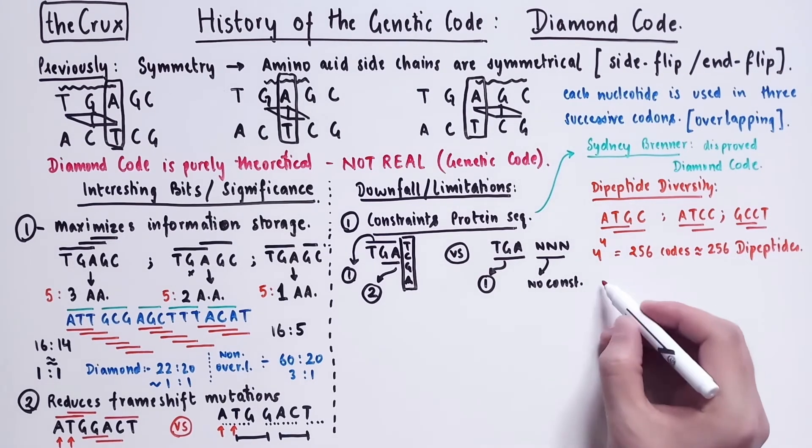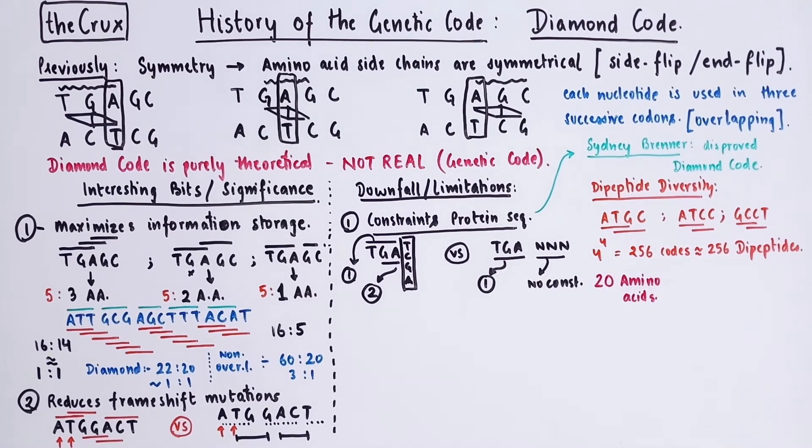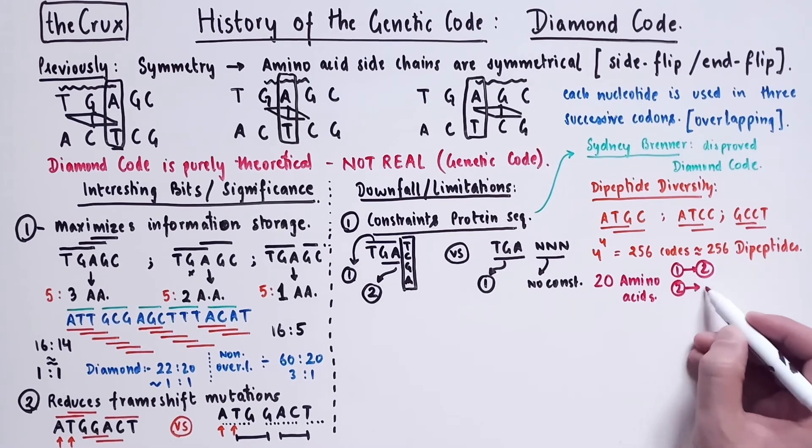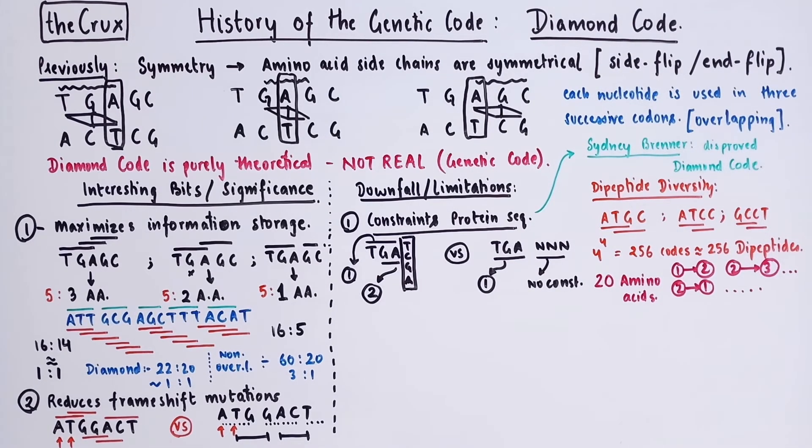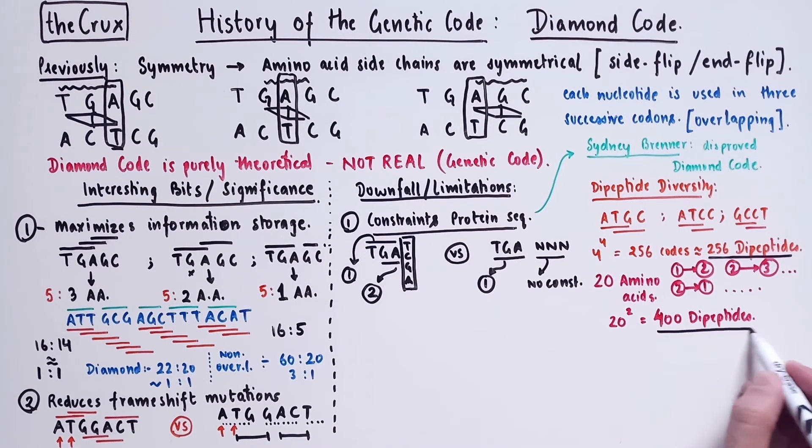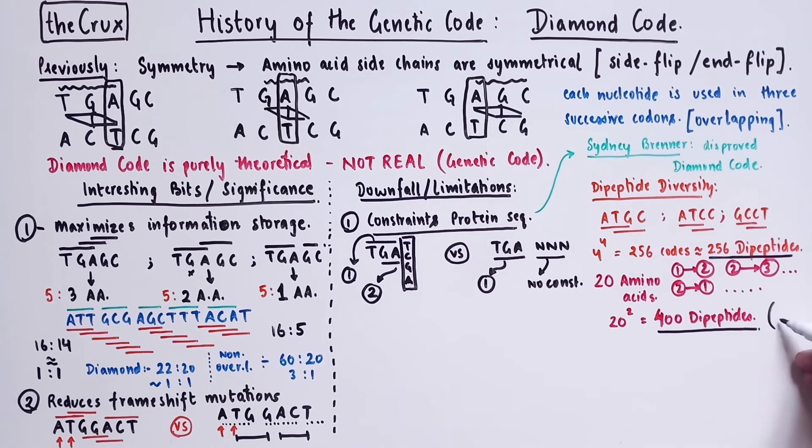But we know that there are 20 natural amino acids in total. And if you think about two amino acids joined together, you can have multiple combinations. And the total number of combinations is just 20 to the exponent of 2, which is 400 dipeptides. However, under diamond code, you can only produce 256 dipeptides. But in nature, there are 400 possibilities. And Sidney Brenner actually confirmed the presence of the 144 dipeptides that usually are not possible under the diamond code. So he showed that there are no such constraints on the protein sequences that exist in nature.